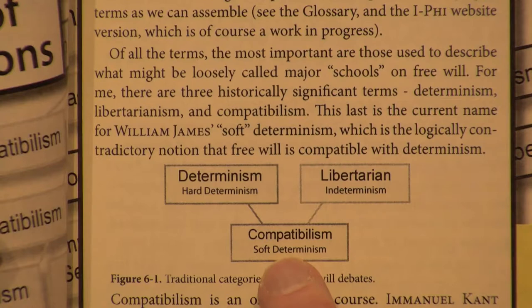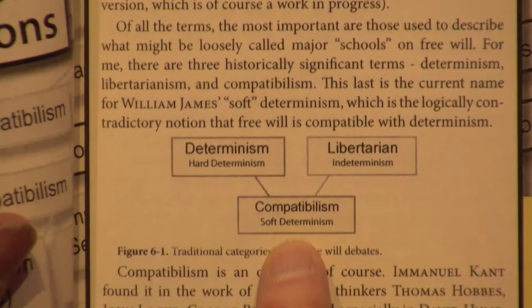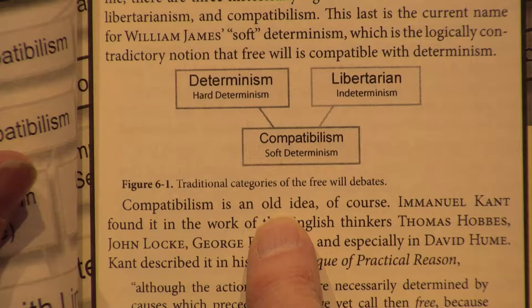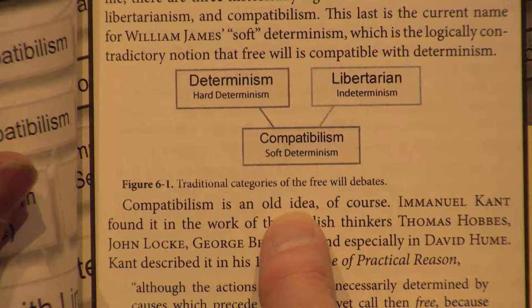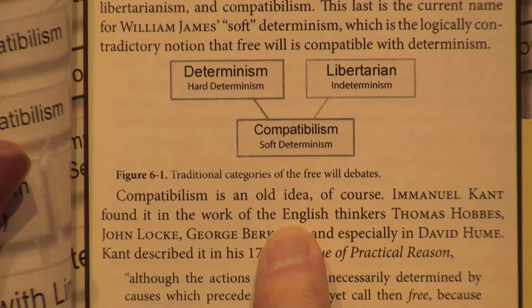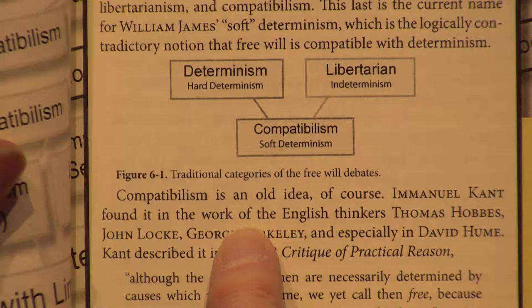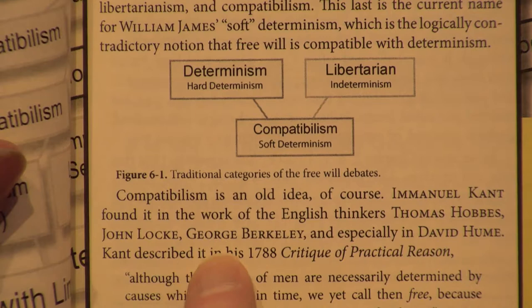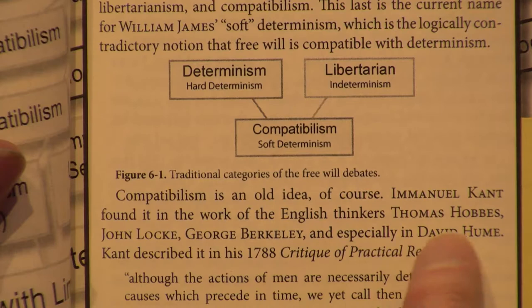I've found a significant history of this idea of compatibilism — it's not a brand new idea, although it became very popular in the late 20th century. The majority of philosophers today think of themselves as compatibilists. I cite Immanuel Kant who found this notion in the work of famous English thinkers like Thomas Hobbes, John Locke, George Berkeley, and especially David Hume — the so-called British empiricists. He wrote about it in the Critique of Practical Reason.